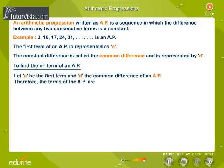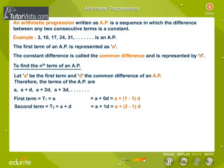Let 'a' be the first term and 'd' the common difference of an AP. Therefore, the terms of the AP are a, a plus d, a plus 2d, a plus 3d and so on. Written as a plus (1 minus 1) into d, a plus (2 minus 1) into d, and a plus (3 minus 1) into d.